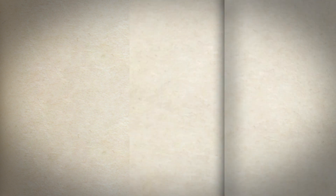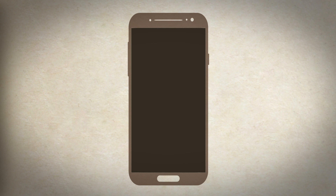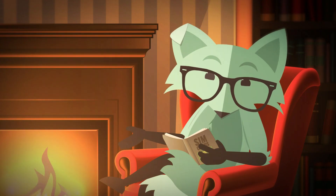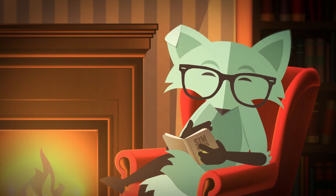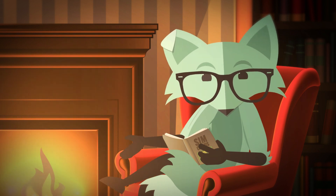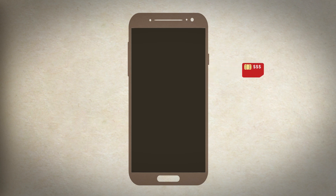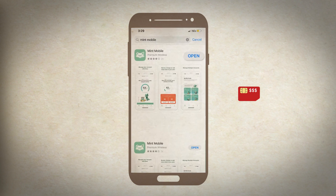And finally, switching SIM cards could mean switching from one carrier to another, like when you're ready to join Mint Mobile. That's our favorite kind of SIM switch, and it's also pretty simple. When you switch carriers, you get a new SIM card to put in your phone. As long as your phone is unlocked, it should accept SIM cards from all different carriers.